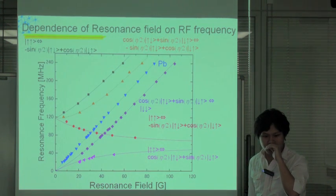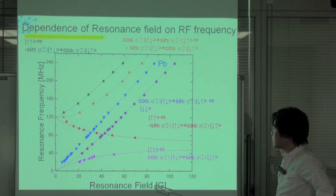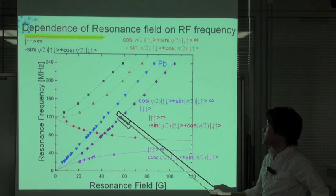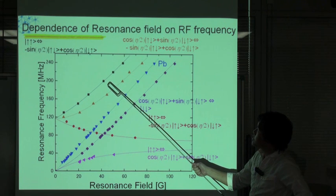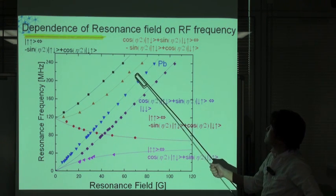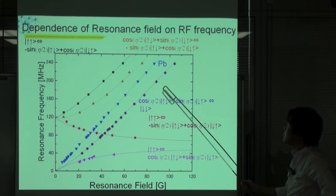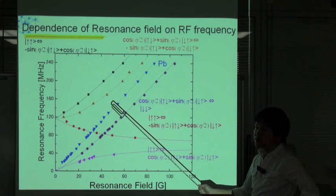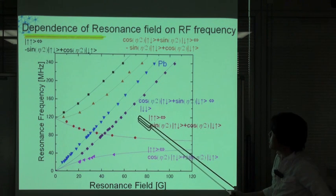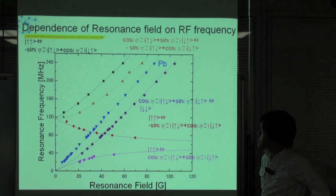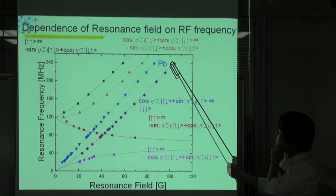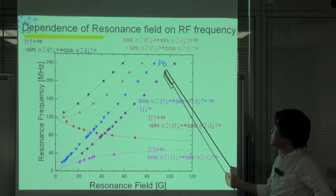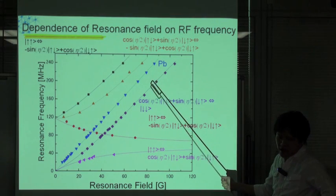Next I show the relation between resonance field in Gauss and resonance frequency in MHz. These plots are experimental results and the transitions correspond to those as labeled: |↑↑⟩ to −|↑↓⟩+|↓↑⟩, |↑↓⟩+|↓↑⟩ to −|↑↓⟩+|↓↑⟩, the PV center transition, |↑↓⟩+|↓↑⟩ to |↓↓⟩, and so on. The solid curves are theoretical results with no fitting parameters, and there is excellent agreement between experiment and theory, proving that we have realized this superposition state. The PV center transition is very close to the |↑↑⟩ to |↓↓⟩ transition because the g-factor of PV center is almost the same.